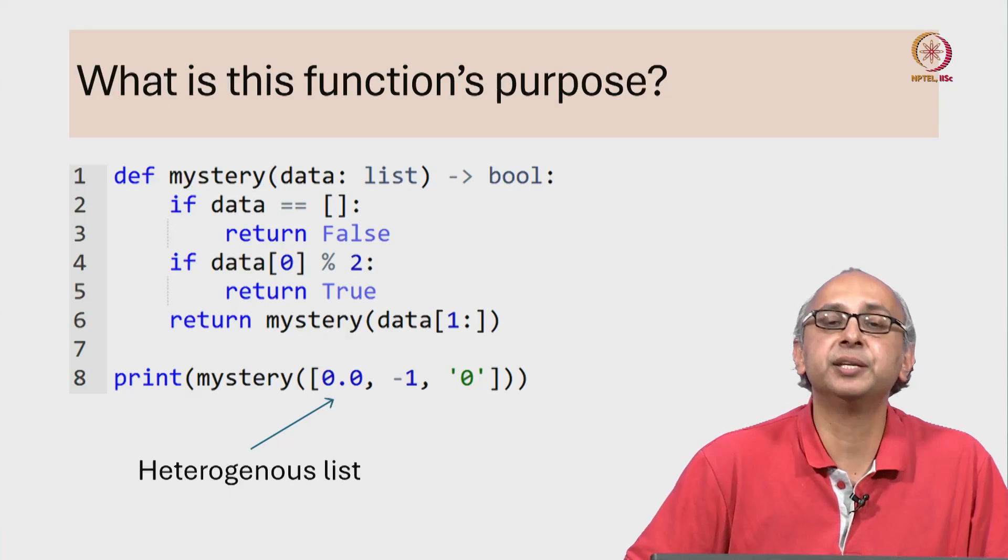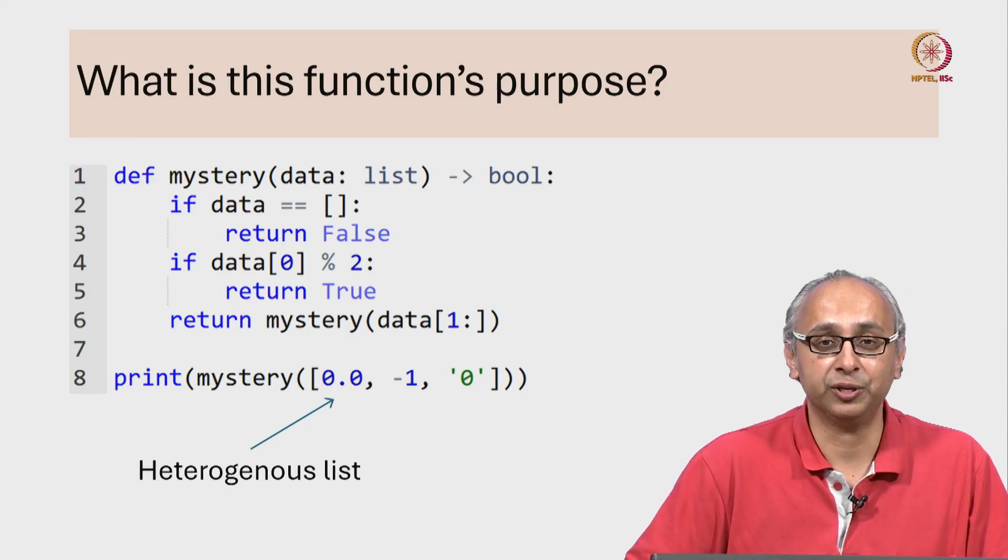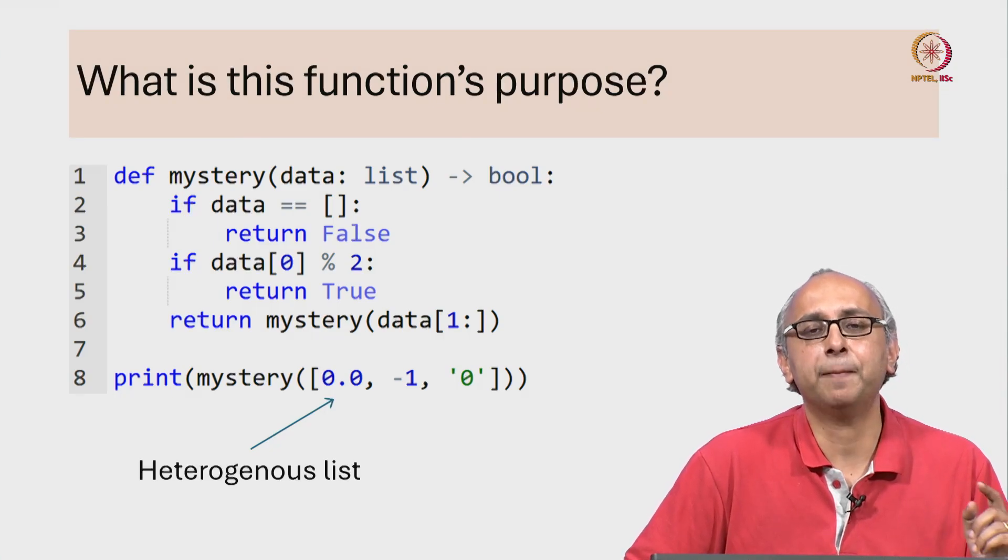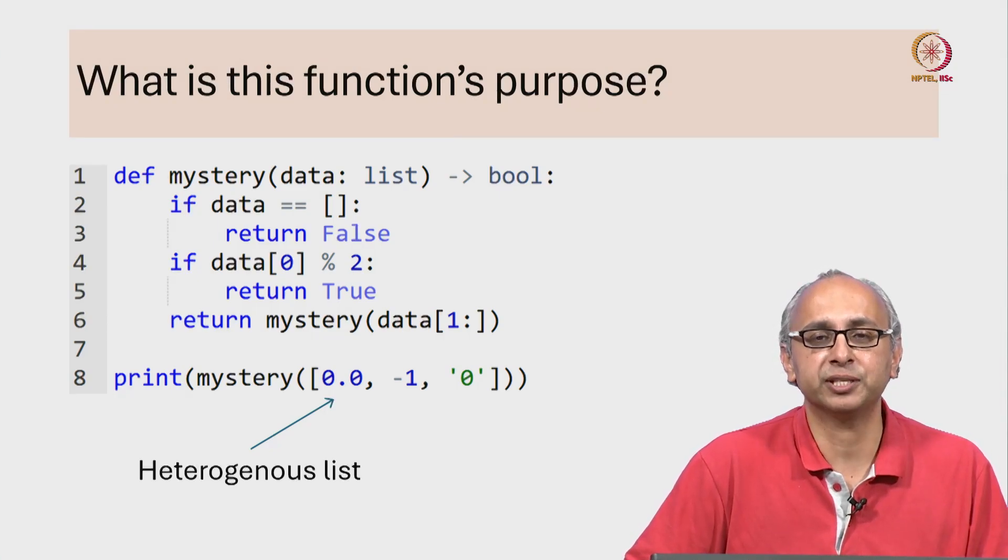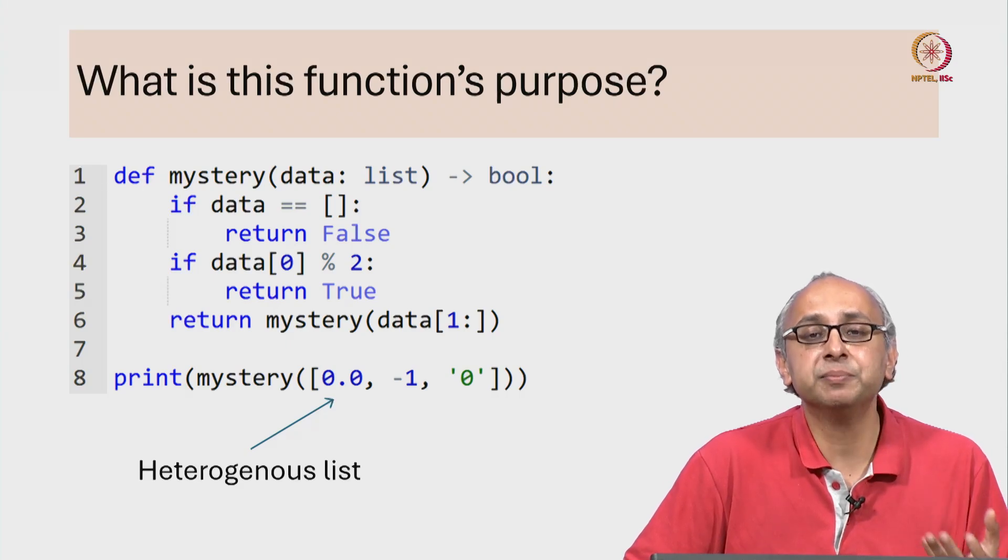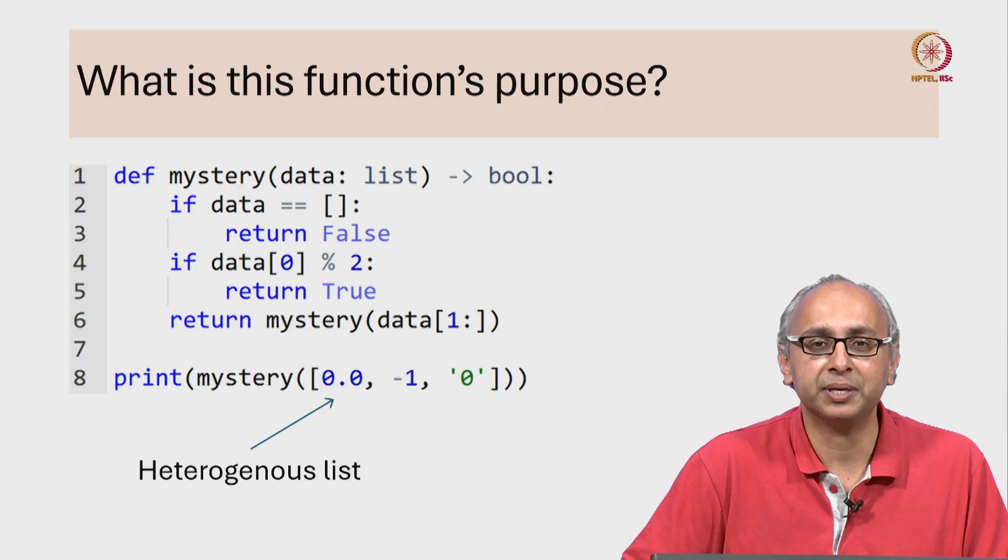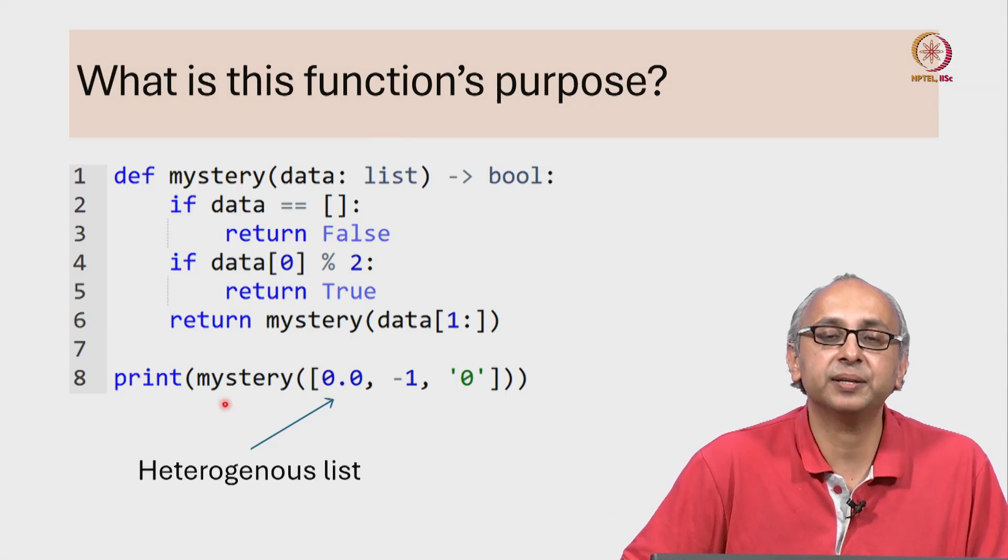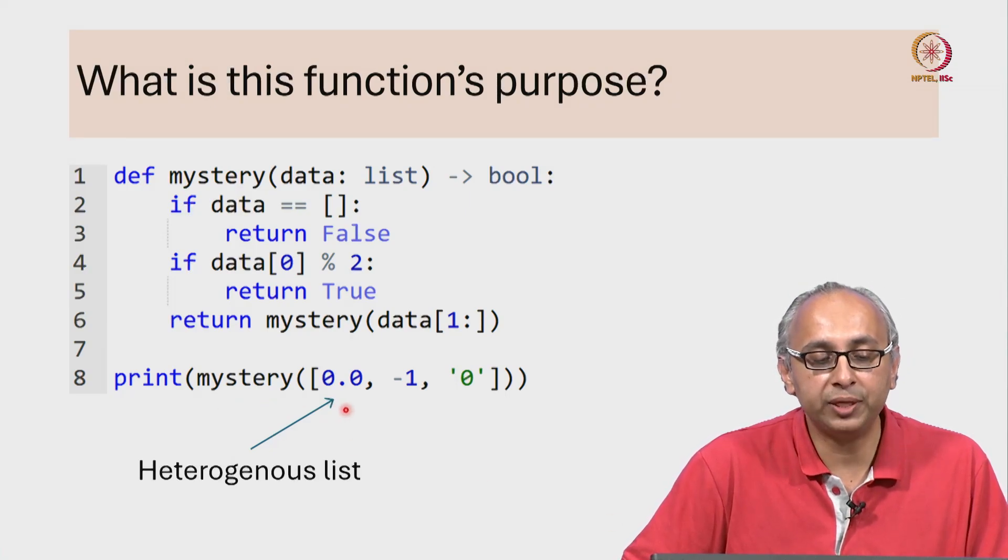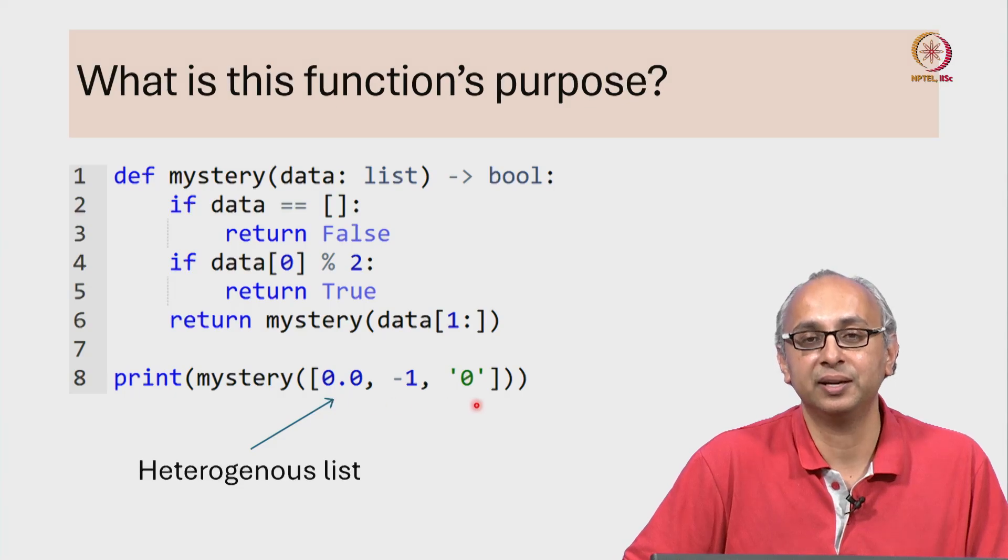Firstly, here is a mystery function that makes use of lists. Remember something that we mentioned in our previous lecture: the items in a list need not be all of the same type. So on line 8, I'm calling this mystery function with a heterogeneous list.